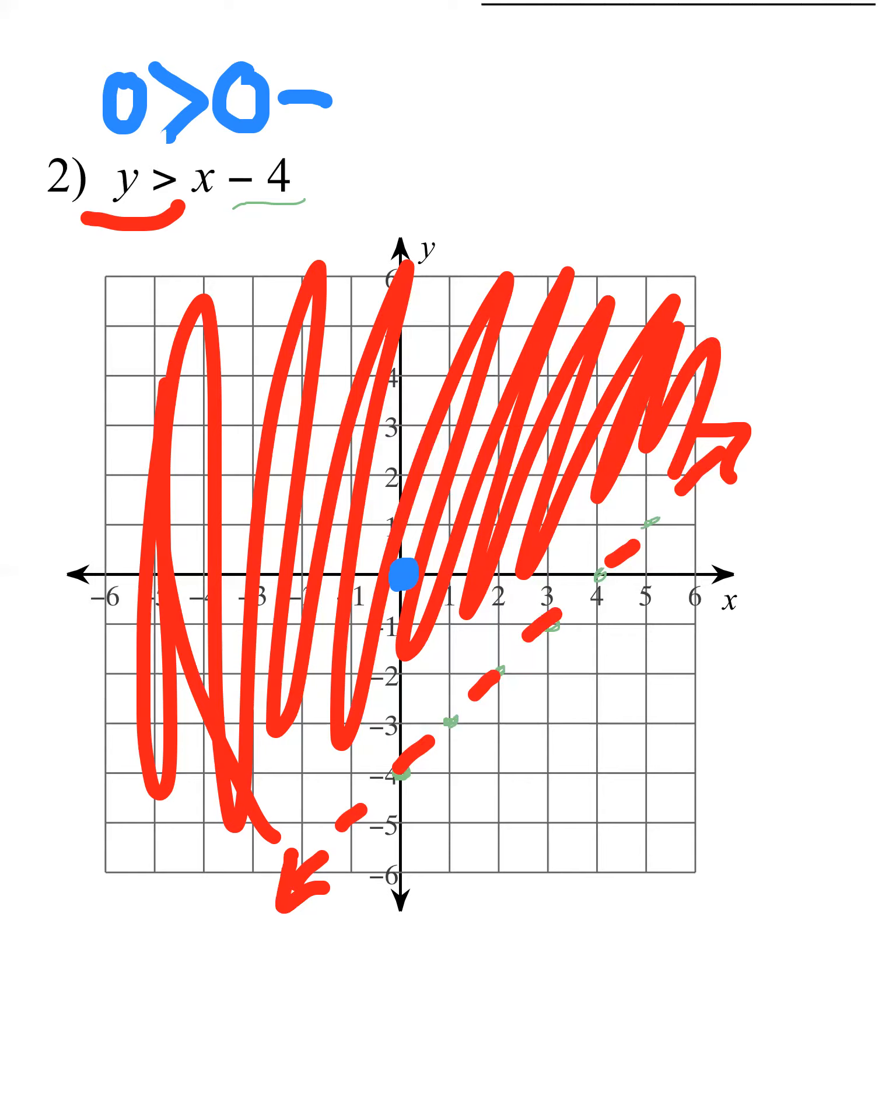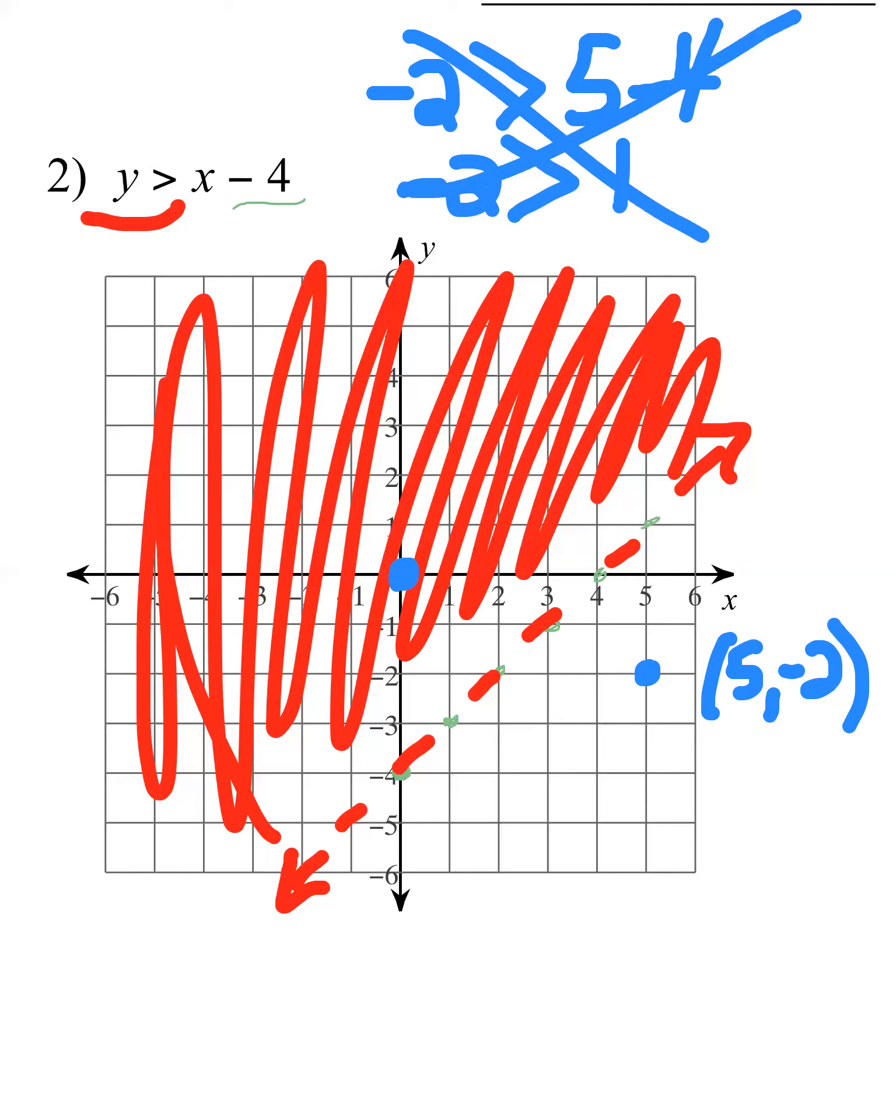Now check this out. If I plug in a point that's not part of my, that I didn't shade over, so let's just pick right here, 5 comma negative 2. You don't have to do this, but I just want to prove my point. If I take this and plug this in, this should not work because I did not shade over it. So let's see, is negative 2 greater than 5 minus 4? Is negative 2 greater than 1? No, it's not. So that didn't make any sense, and it wasn't supposed to because 5 comma negative 2 is not part of my solution set. That's just another way that you can double check yourself. But like I said, if it's in slope-intercept form, you can just look at it and you know to shade above or below. Y is greater than you shade up, Y is less than you shade below.